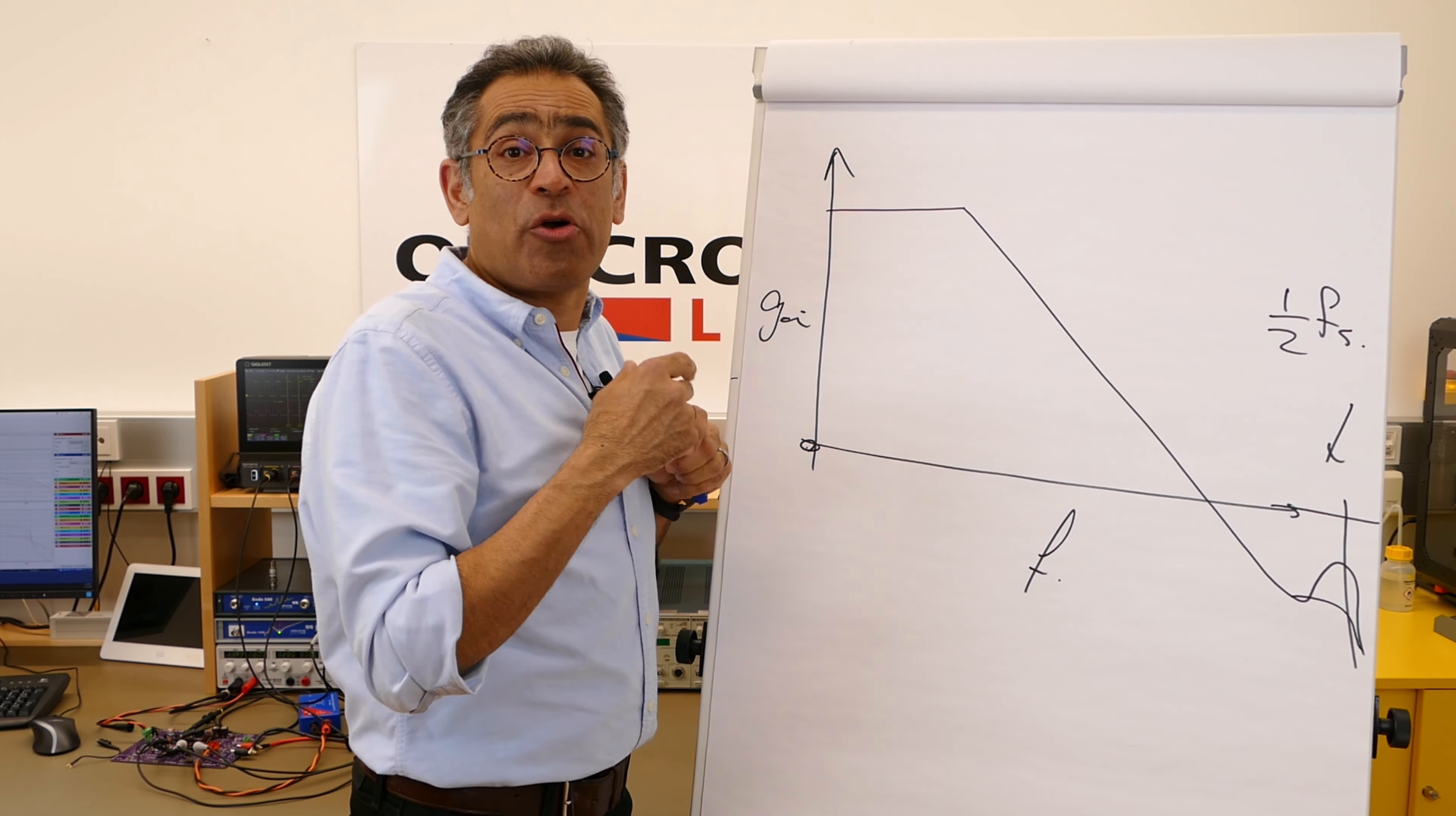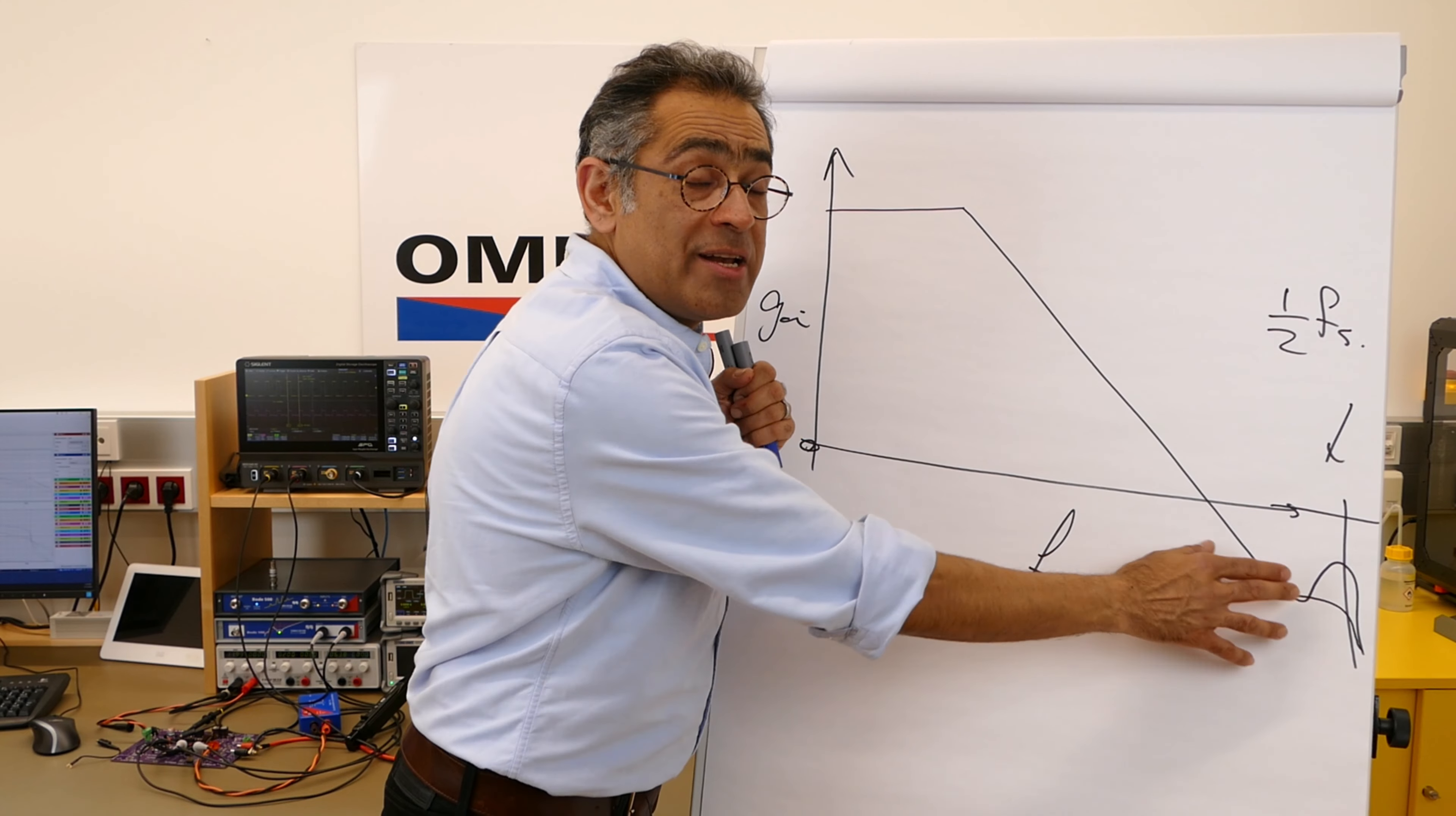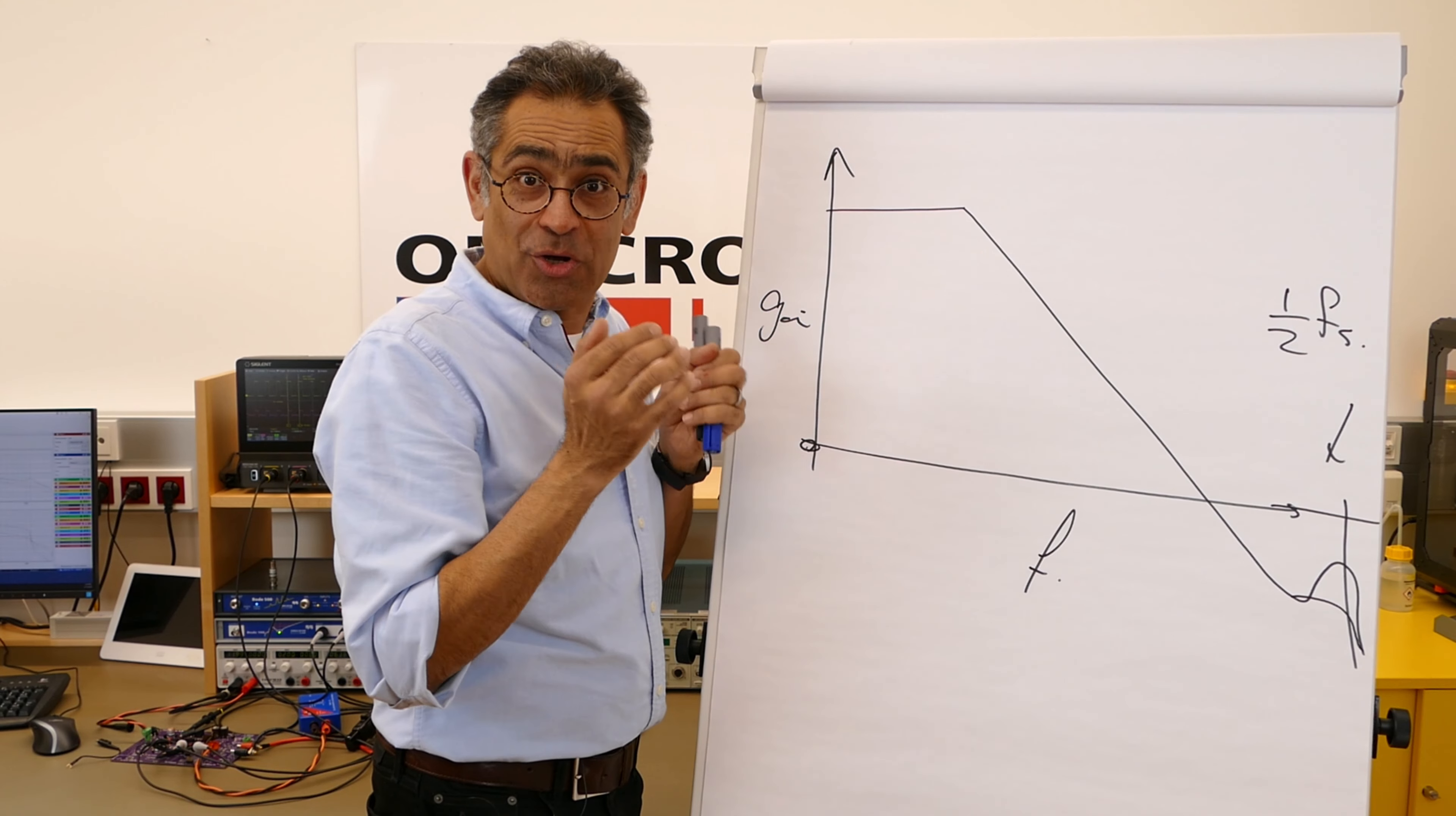So what we're going to do is we're going to go to the lab, and we're going to show this in both frequency domain and in time domain. We're going to show that we have got subharmonic oscillations in time domain, and then we're going to see that peaking on our Bode plot, and we're going to gradually start adding compensating ramp. And you'll see that this gets damped and damped and damped, and when it gets damped enough, the subharmonic oscillations goes away.